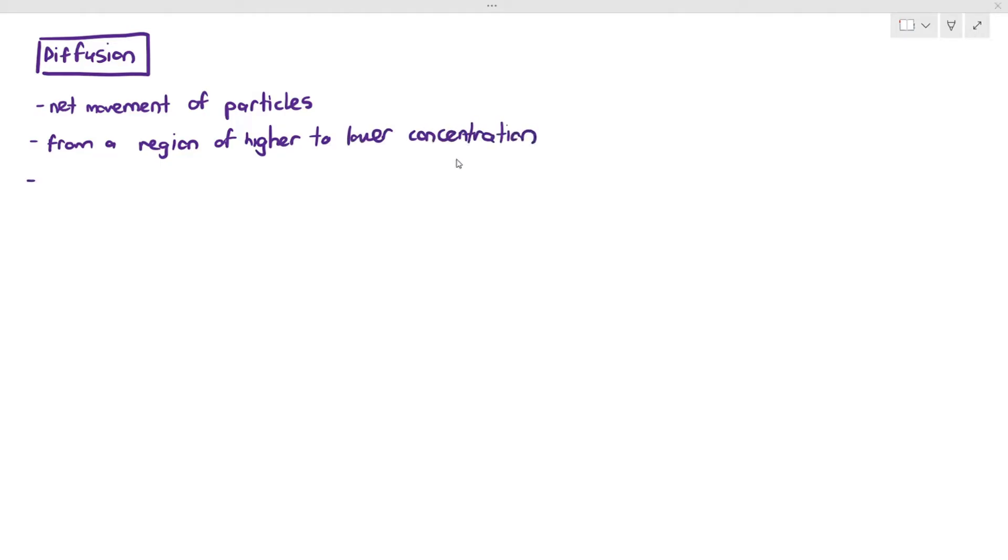You can also say down the concentration gradient due to random motion of the particles. Random motion means particles move automatically due to the nature of our universe where they will move from an area of higher to lower concentration.